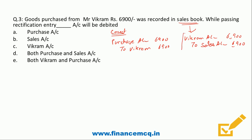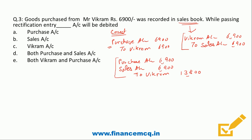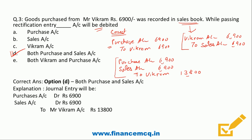To rectify, we debit Purchase Account 6,900 (what should have been debited), and also debit Sales Account 6,900 (to reverse the wrong credit). The credit goes to Vikram Account for double the amount, that is 13,800. So both Purchase and Sales accounts will be debited — option D is the correct answer.